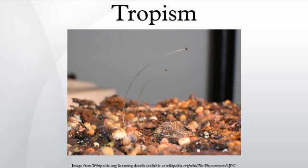A tropism is a biological phenomenon indicating growth or turning movement of a biological organism, usually a plant, in response to an environmental stimulus. In tropisms, this response is dependent on the direction of the stimulus.